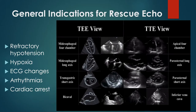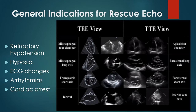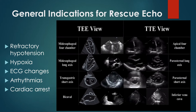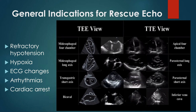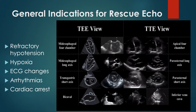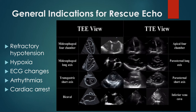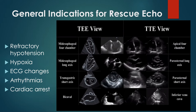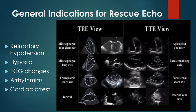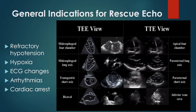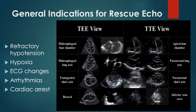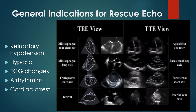Over the last decade, perioperative echo has expanded to hemodynamic management in non-cardiac surgery. TTE is useful in non-cardiac operating rooms to monitor patients with cardiopulmonary disease or suspected hemodynamic instability. It's a unique imaging modality allowing providers to visualize dynamic heart function and promote ongoing surgical and medical adjustments. General indications include refractory hypertension, hypoxia, EKG changes, arrhythmias, and cardiac arrest.